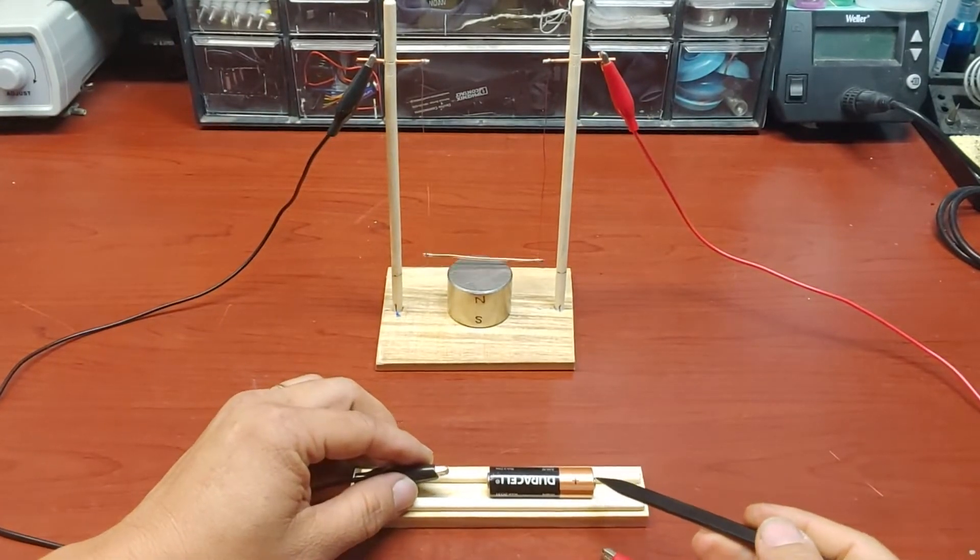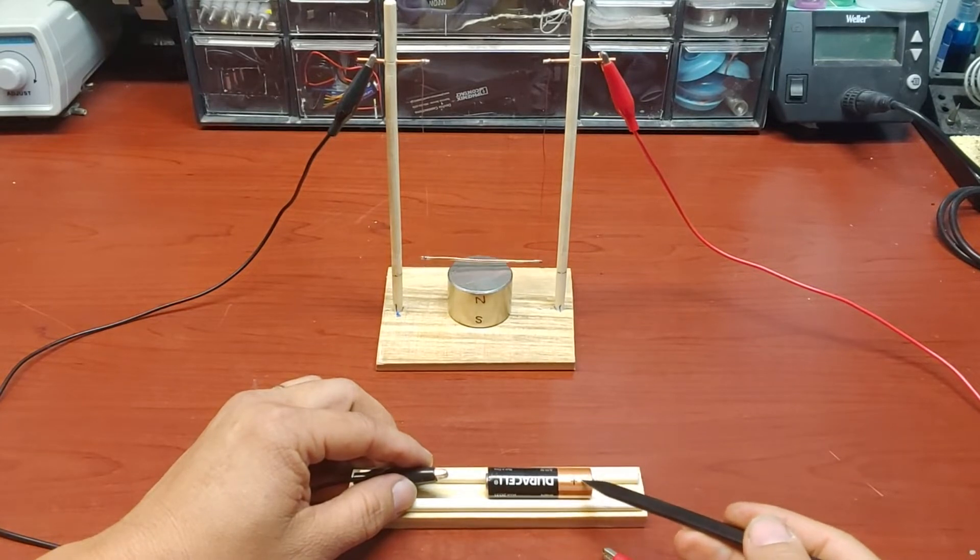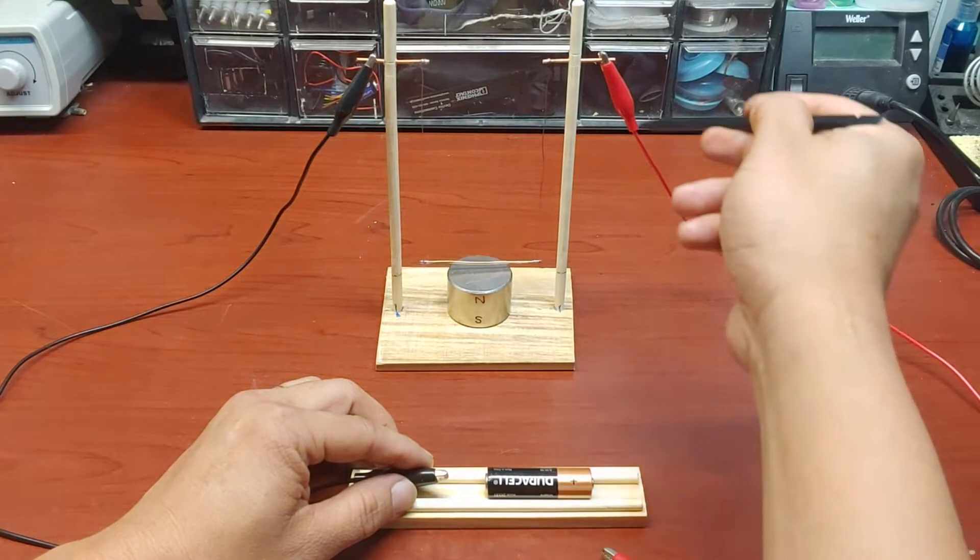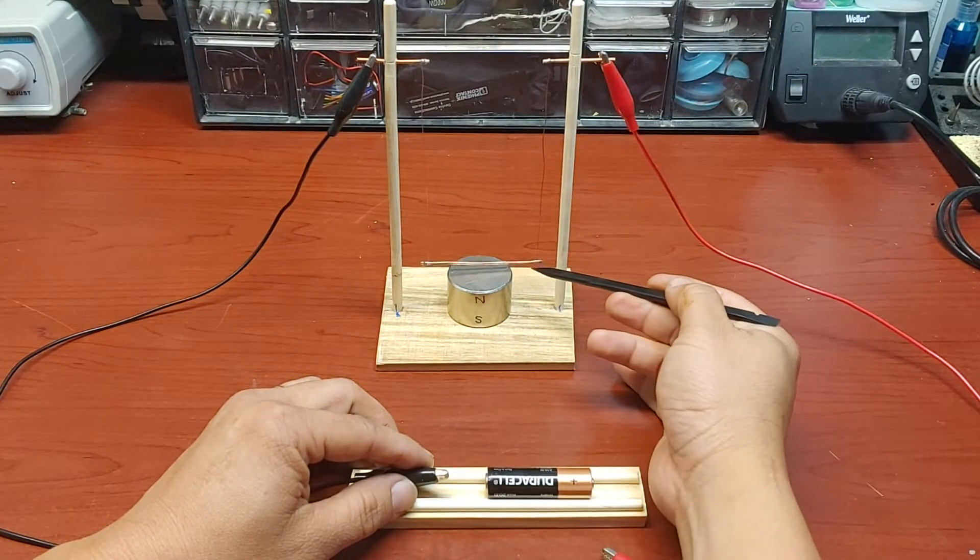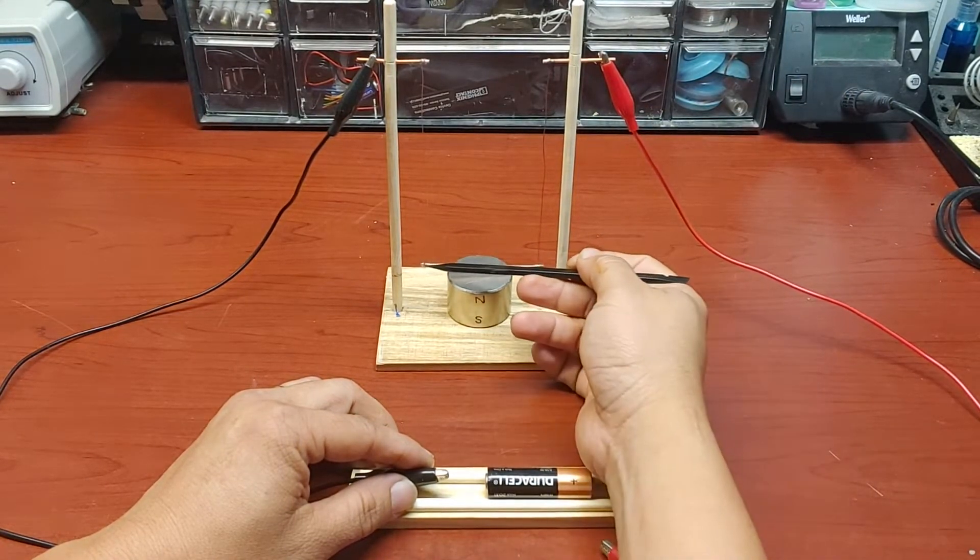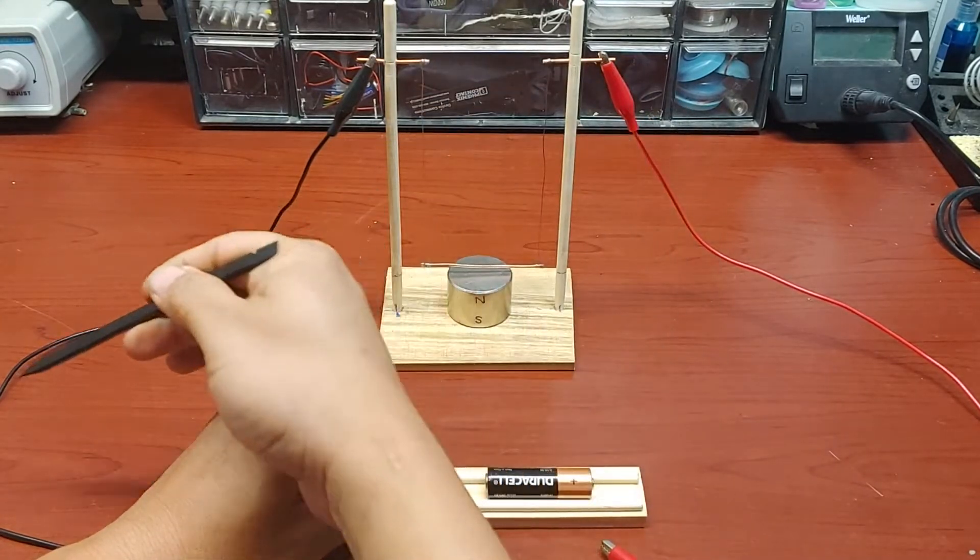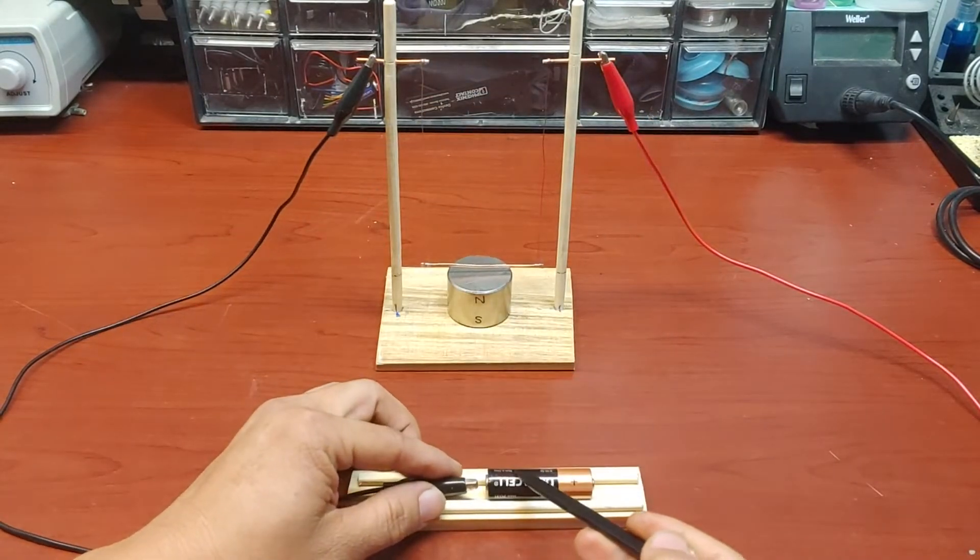We have electric current flow from the positive side of the battery, go to the conductor, go from the right to the left, and go back to the negative side of the battery.